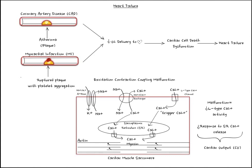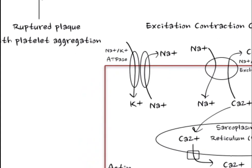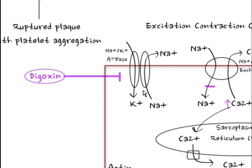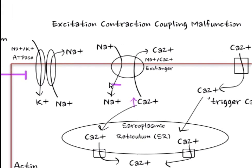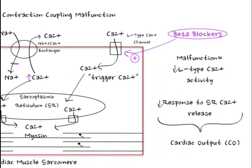In chronic heart failure, excitation-contraction coupling can be impacted by two drugs. Digoxin can block the sodium-potassium ATPase, preventing the outflow of sodium, thereby preventing the influx of sodium into the cell. Since sodium can't come in, calcium can't go out, resulting in an increased concentration of calcium inside the cell. This increased calcium can be stored in the sarcoplasmic reticulum, providing a greater force of contraction when the next neuronal signal comes.